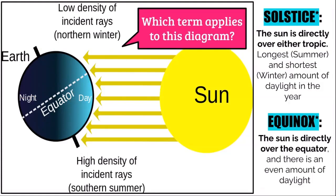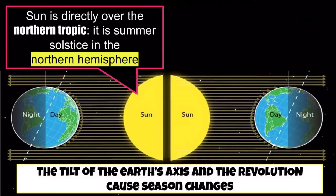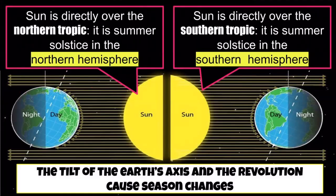So which term applies to this diagram? You should be thinking solstice — specifically the summer solstice in the southern hemisphere and the winter solstice in the northern hemisphere. To review: when the sun is directly over the northern tropic, it's summer in the northern hemisphere. When it's directly over the southern tropic, it's summer in the southern hemisphere. It's because of this tilt and the revolution that causes these different season changes.